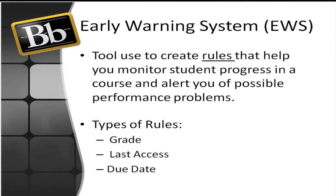The Early Warning System is basically a course evaluation tool that you can use to monitor your student progress throughout the course and alert you of possible performance problems. The monitor is based on three basic rules: it could be grade associated, due date associated, or access associated.